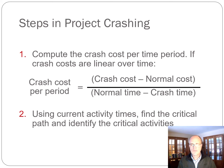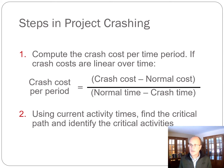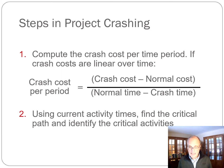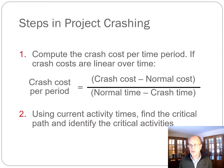The next key point is: you only crash activities that are on the critical path. Using current activity times, find the critical path and identify the critical activities. Those are the ones you want to shorten. If you shorten an activity that's not on the critical path, you may spend more money and make that individual activity shorter, but you do not affect the whole project duration.